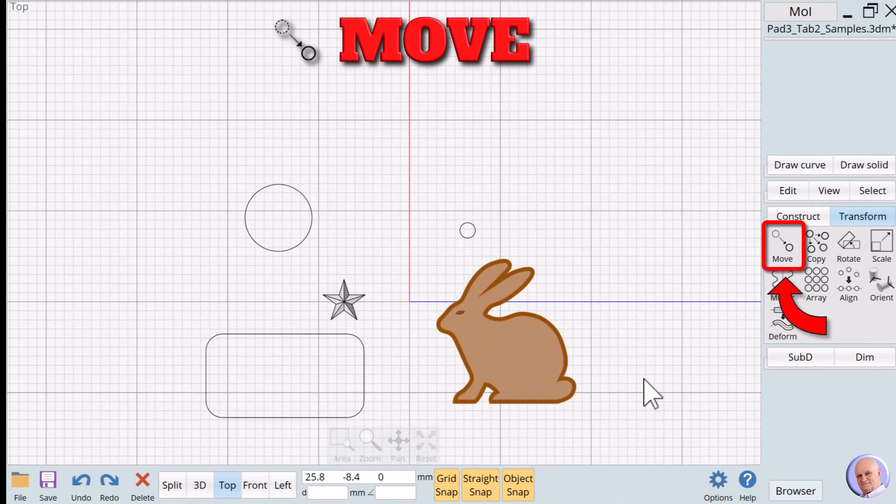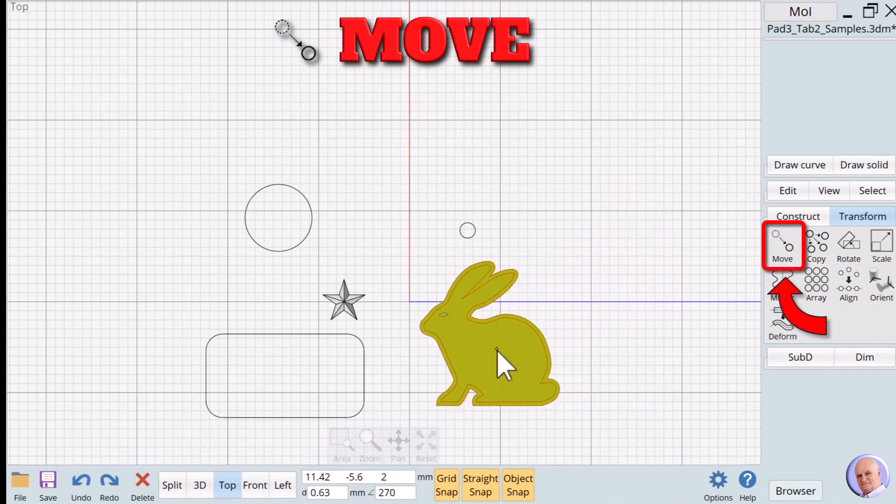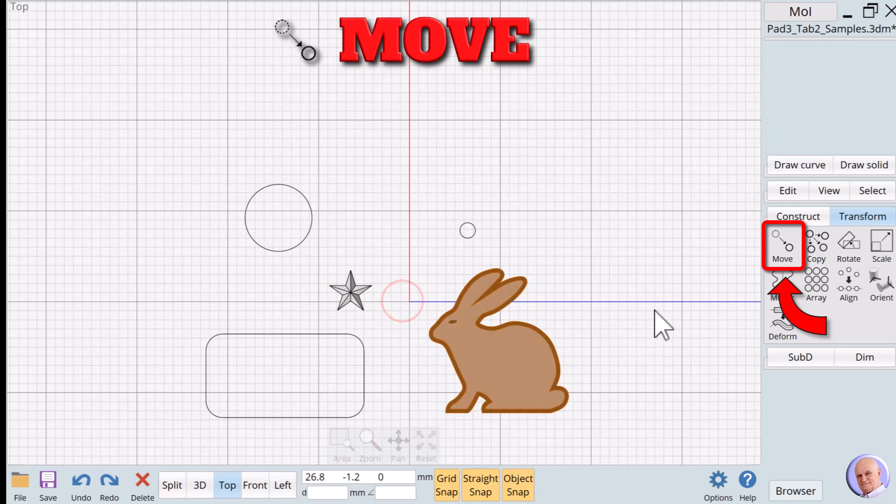The move verb. We can move an object in Moment of Inspiration at any time by clicking on it, and while holding down the left mouse button, move the object around at will. But the move verb provides us with much greater precision over final placement. We invoke the move verb by clicking on the move button.